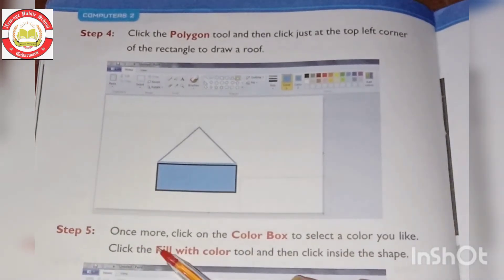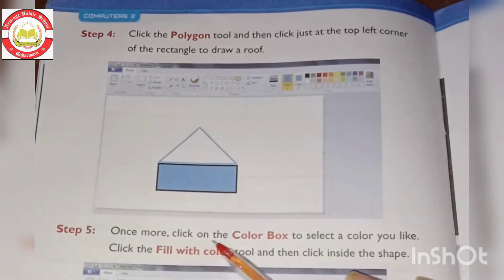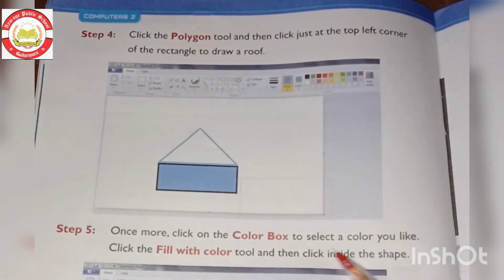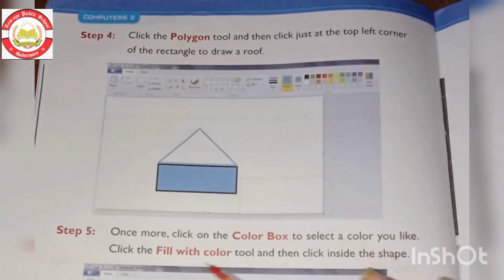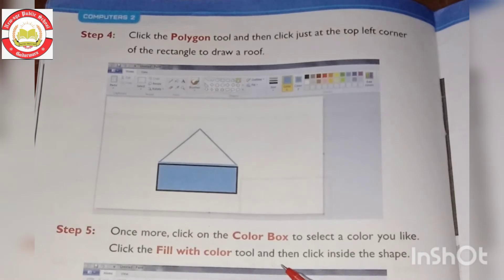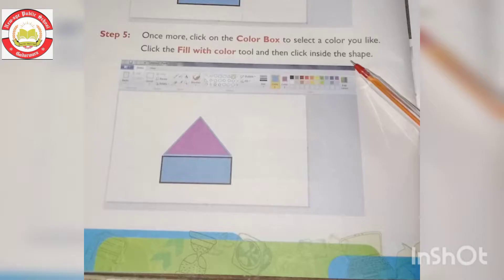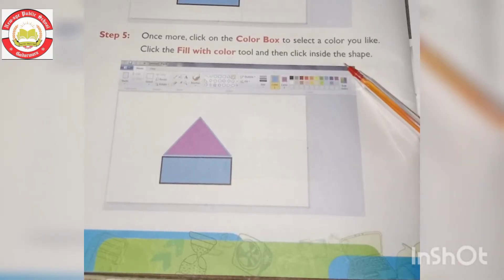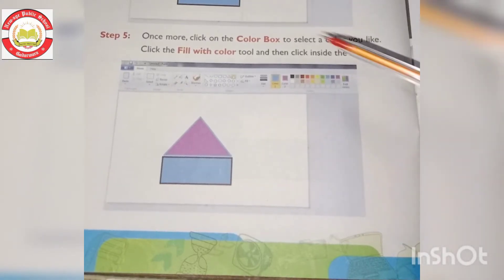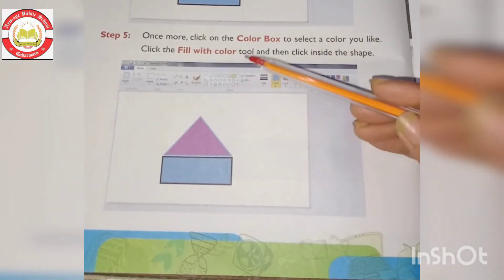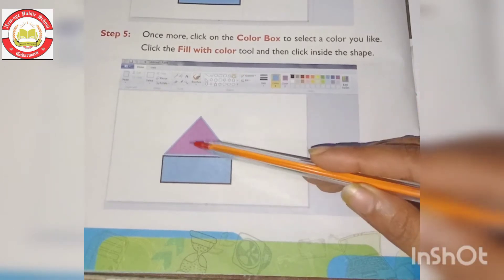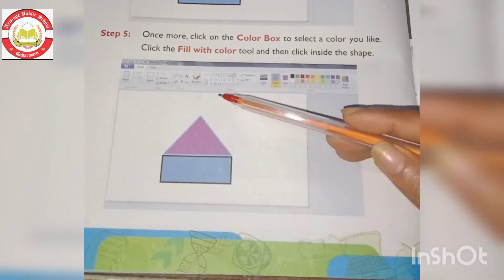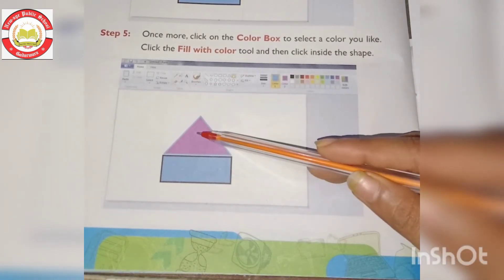Step 5: Once more, click on the color box to select a color you like. Click the Fill with Color tool and then click inside the roof shape. Choose whatever color looks good and fill in the roof.